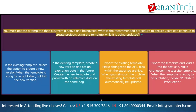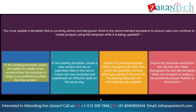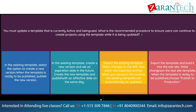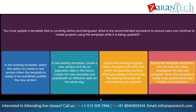Question: You must update a template that is currently active and being used. What is the recommended procedure to ensure users can continue to create projects using the template while it is being updated? Option 1: In the existing template, select the option to create a new version. When the template is ready to be published, publish the new version. Option 2: In the existing template, create a new version and set an expiration date in the future. Create the new template and publish with an effective date on the same day. Option 3: Export the existing template, make changes to the XML files within the exported archive, and when you re-import the archive, the existing template will automatically be updated. Option 4: Export the template and load it into the test site. Option 5: Make changes in the test site template. When the template is ready to be published, choose Publish to Production.